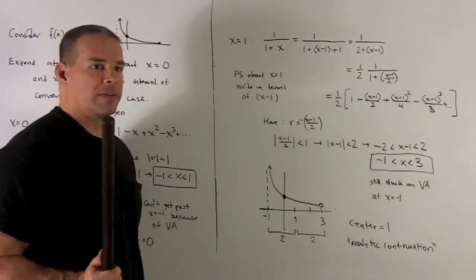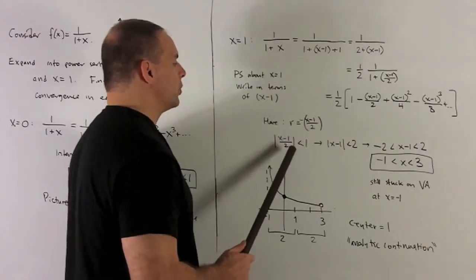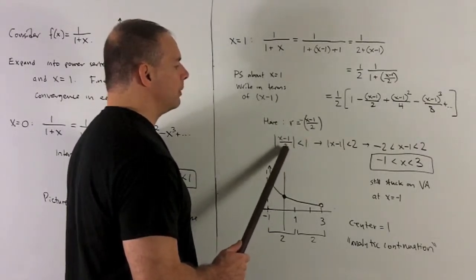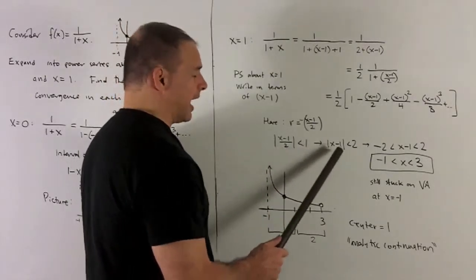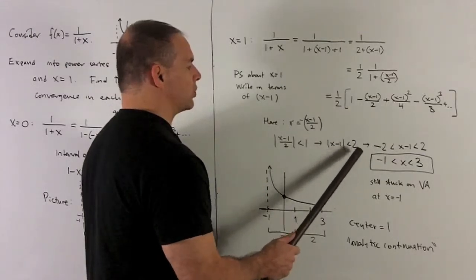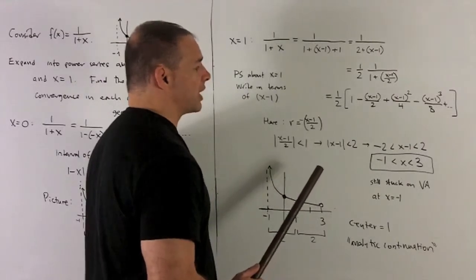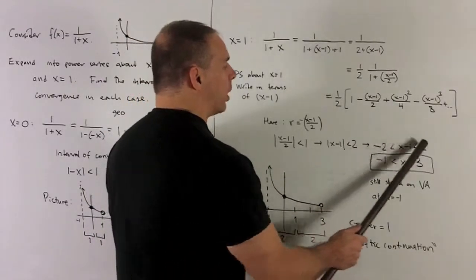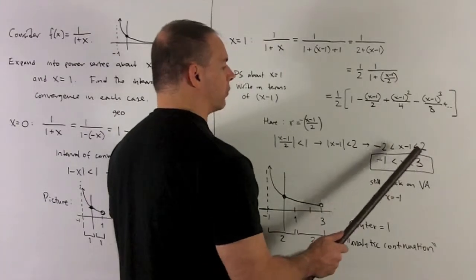Let's see what the new interval of convergence is. I take our r, put it in absolute values and set it strictly less than 1. I can push the 2 to the other side, and we have |x minus 1| strictly less than 2. We decode this: 2 goes here, minus 2 goes on the other side, drop absolute value signs. Add 1 to each side, and our interval of convergence is minus 1 to 3.